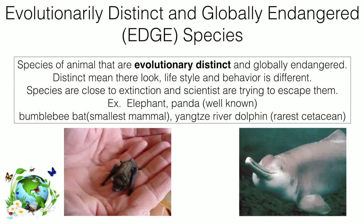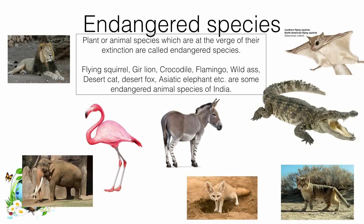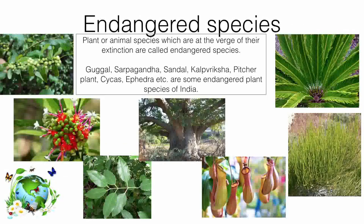Some examples of endangered animal species include the gharial crocodile, flying squirrel, flamingo, wild ass, desert cat, desert fox, and the Asiatic elephant. Some endangered plant species include guggul, sarpagandha, sandalwood, kalpavriksha, pitcher plant, cycas, and ephedra.